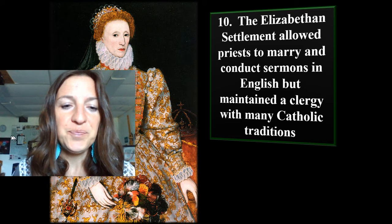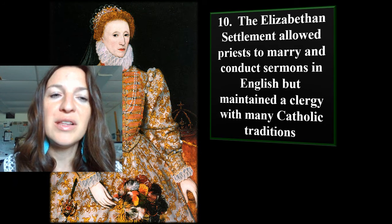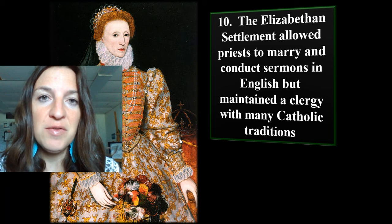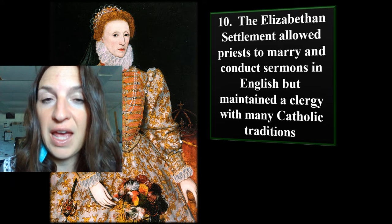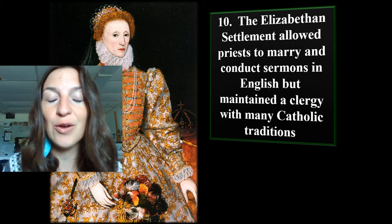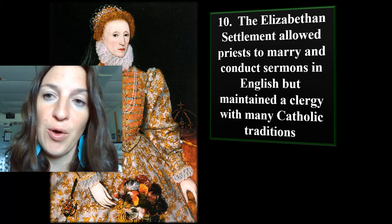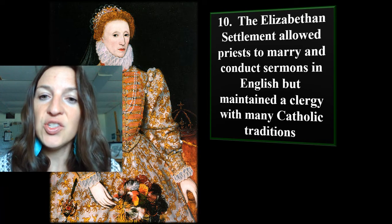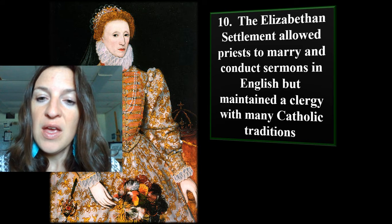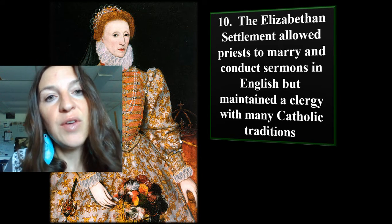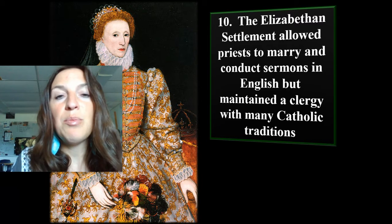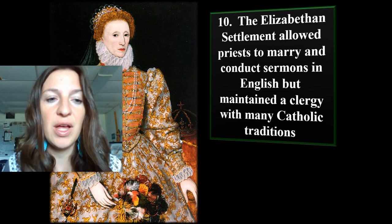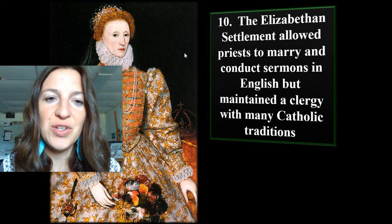Note number ten: the Elizabethan Settlement. Elizabeth was such a powerful queen that we call the time during which she ruled — 1550s to 1600 — the Elizabethan Age. There's fashion, furniture, and theater that goes with that which people around the world know about. The Elizabethan Settlement allowed priests to marry in England and to conduct sermons in English instead of Latin. But the Anglican tradition has a lot of Catholic influence — communion, baptism, prayers, liturgies, blessings — and the Common Book of Prayer is similar to a lot of Catholic liturgy. That's kind of how she bridged that divide.